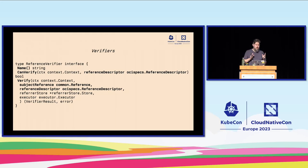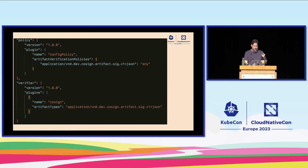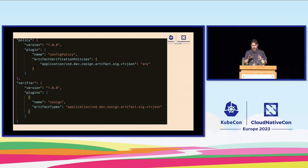You could build a ton of cool functionality into these plugins. Ratify has a few already. First, since we signed those images with cosign, let's use the cosign verifier. In the config under plugins and verifier we have cosign — it's going to apply to vnd.dev/cosign.sig artifacts, version 1. We then make a policy that says we want to apply this to any of those objects, so anything in the request with that type gets this verifier applied.